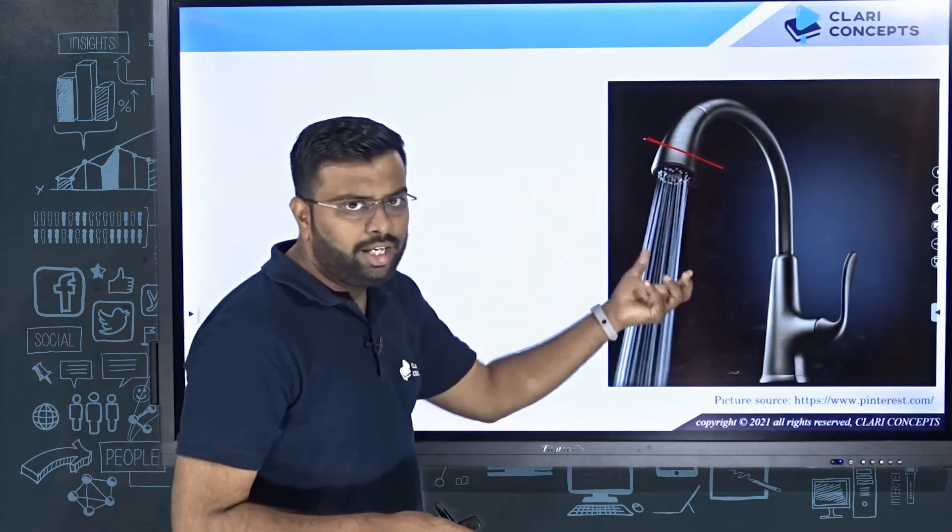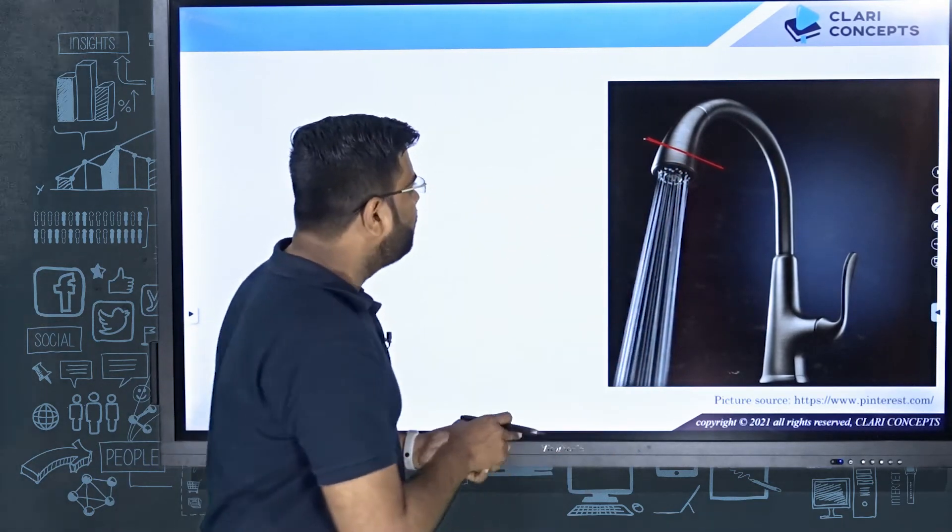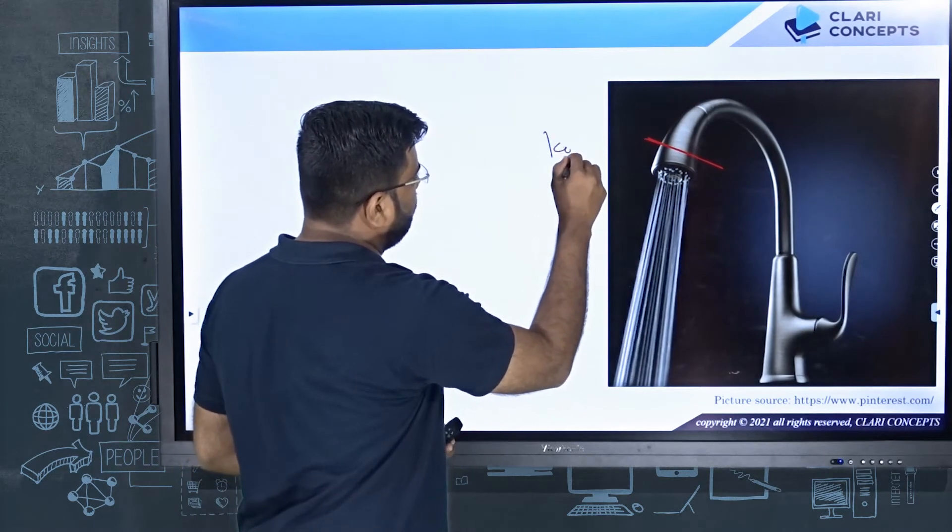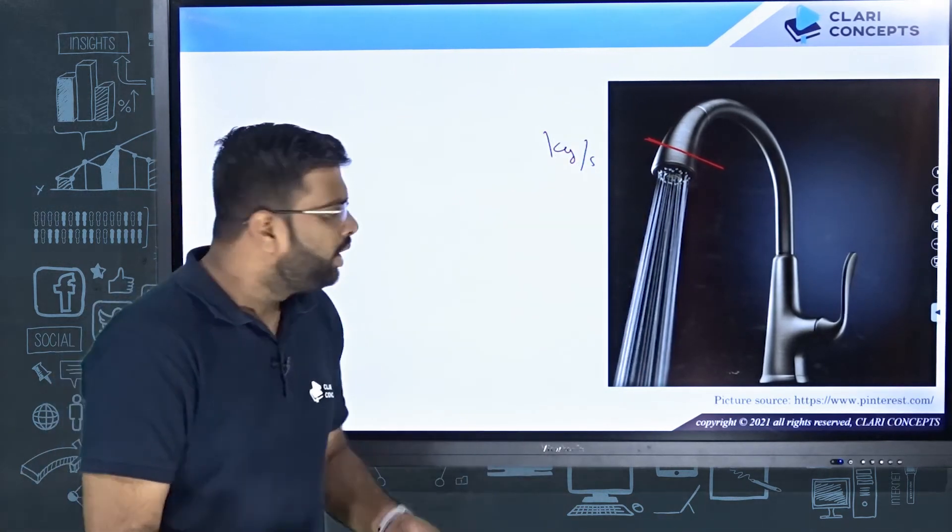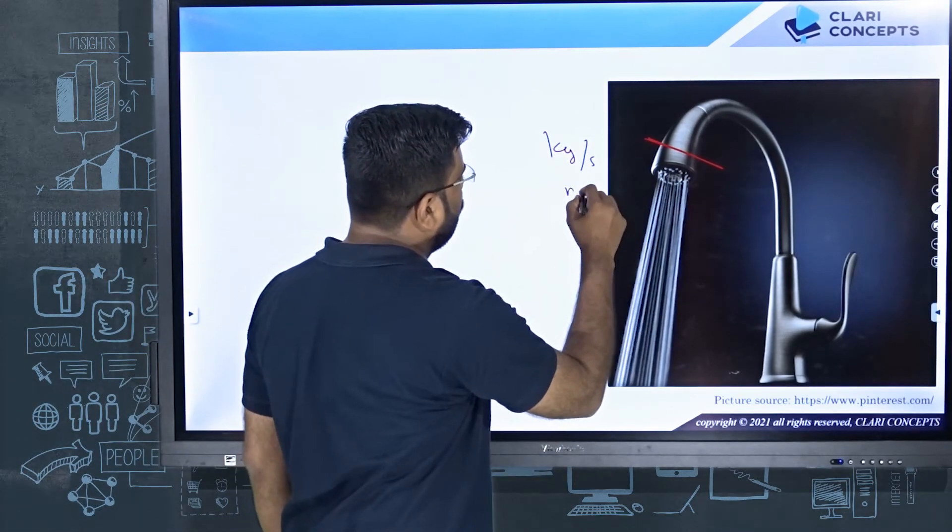If you measure the amount of water in mass coming out every second, that is known as mass flow rate, which is measured in kg per second. And if you measure this in terms of volume, this is known as volume flow rate, that is meter cube per second or liters per second.